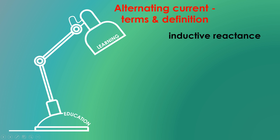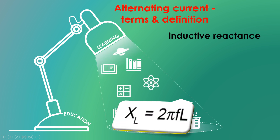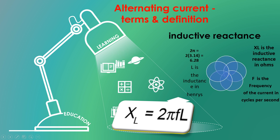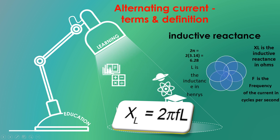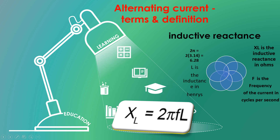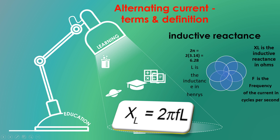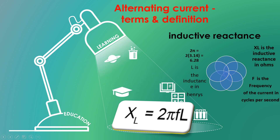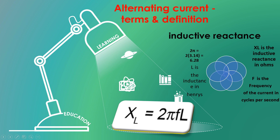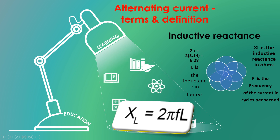Inductive reactance. To find the inductive reactance, the formula is XL equals to 2 pi FL, where XL is the inductive reactance in ohm, F is the frequency of current in cycles per second. The value of 2 pi is 6.28. L is the inductance in Henry.